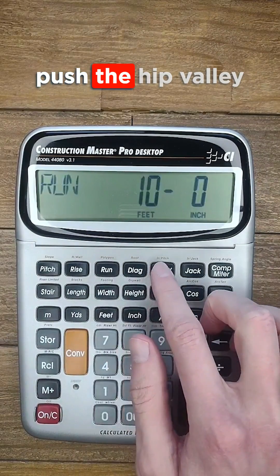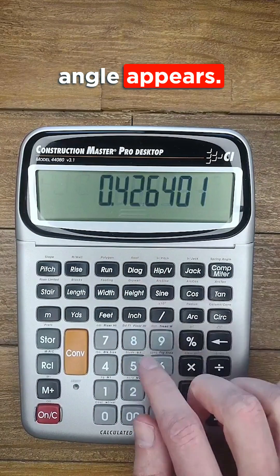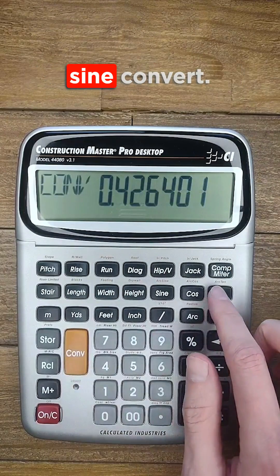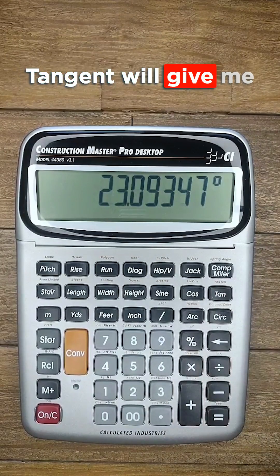Now I'm going to push the hip valley button until plumb angle appears. Then just pushing sine, convert, tangent will give me my backing angle.